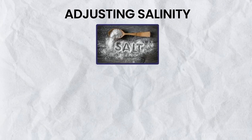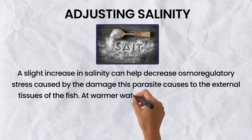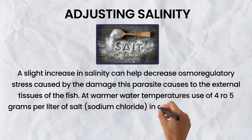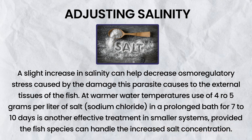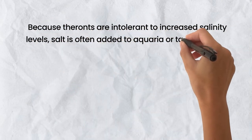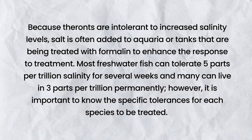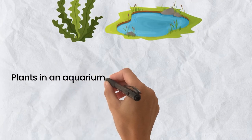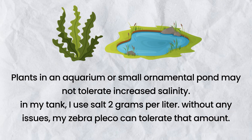A slight increase in salinity can help decrease osmoregulatory stress caused by the damage this parasite causes to the external tissues of the fish. At warmer water temperatures, use of 4 to 5 grams per liter of sodium chloride in a prolonged bath for 7 to 10 days is another effective treatment in smaller systems, provided the fish species can handle the increased salt concentration. Salt is often added to tanks being treated with formalin to enhance the treatment response. Most freshwater fish can tolerate 5 parts per thousand salinity for several weeks. In my tank, I use salt at 2 grams per liter — my zebra plecos tolerate that amount without any issues.